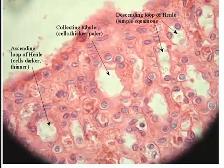Okay folks, if you're wondering what we're looking at here, we're looking at the histology of the loop of Henle. We should notice that it has a U shape and has descending and ascending segments.